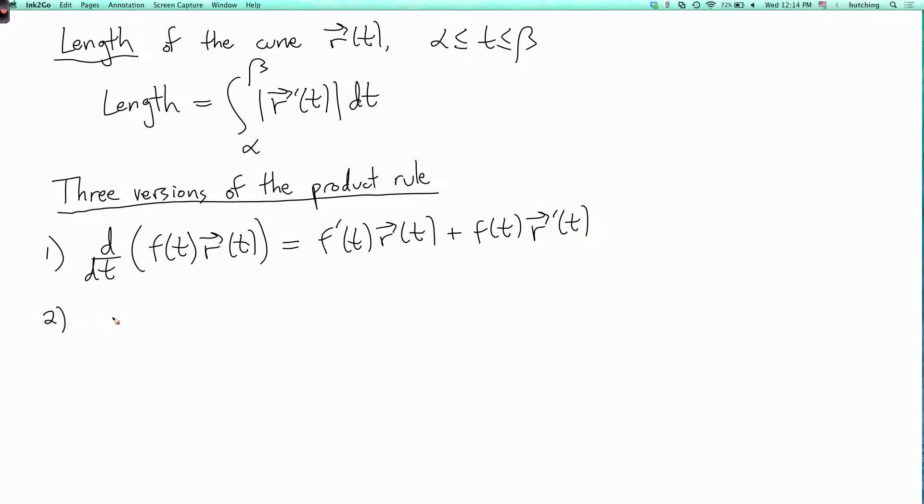Second, if I have two vector-valued functions, r of t and s of t, then I can take their dot product to get a real-valued function.